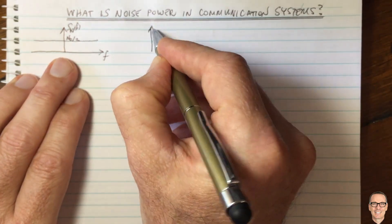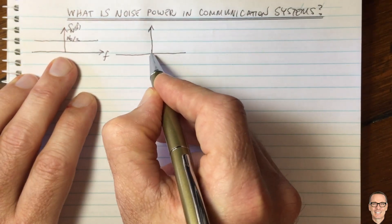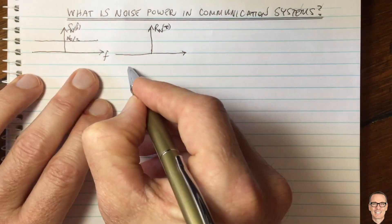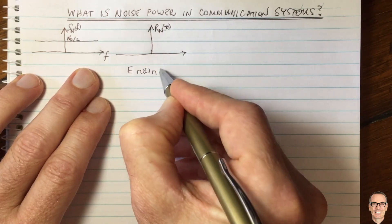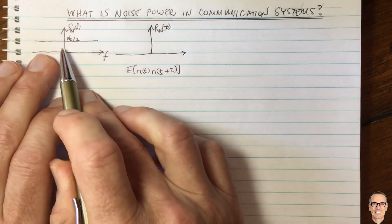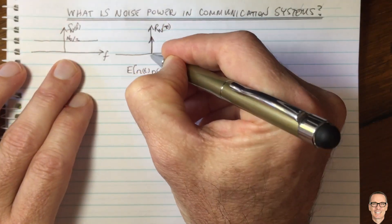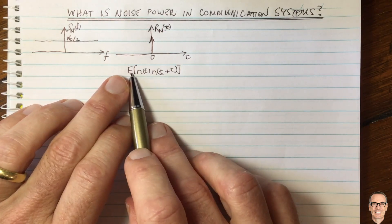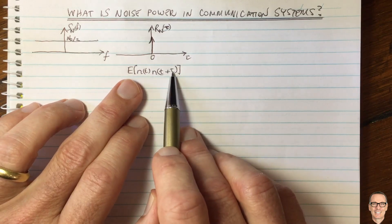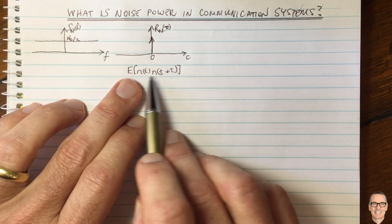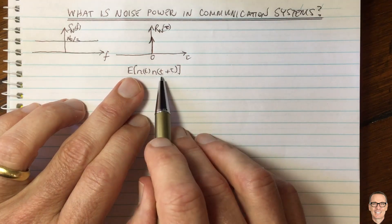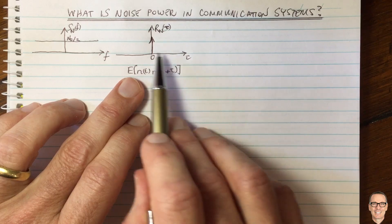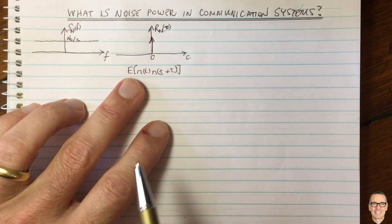What does this mean for autocorrelation and noise being independent? If we take the inverse Fourier transform, we get the autocorrelation function for the noise. The autocorrelation function R_n(τ) is the expected value of noise at time t times noise at time t plus τ. The inverse Fourier transform gives you a delta function at zero. This says there is zero correlation for any time offset other than τ equals zero, so the noise is independent because different noise samples at different times have zero correlation.